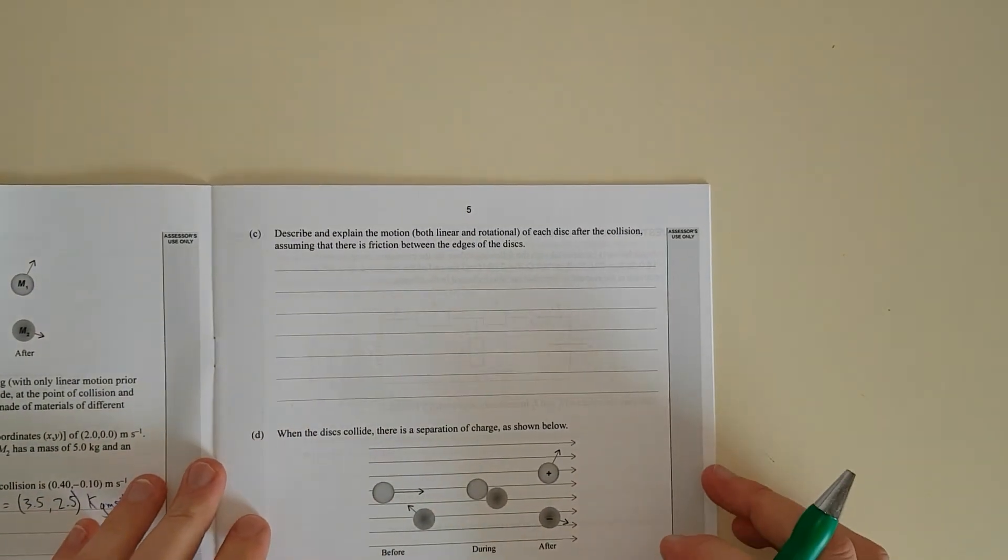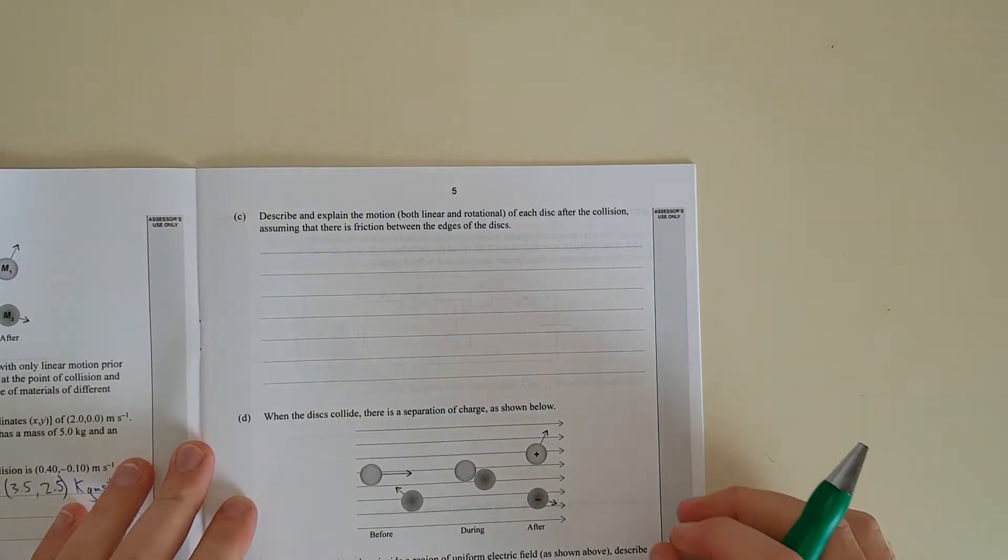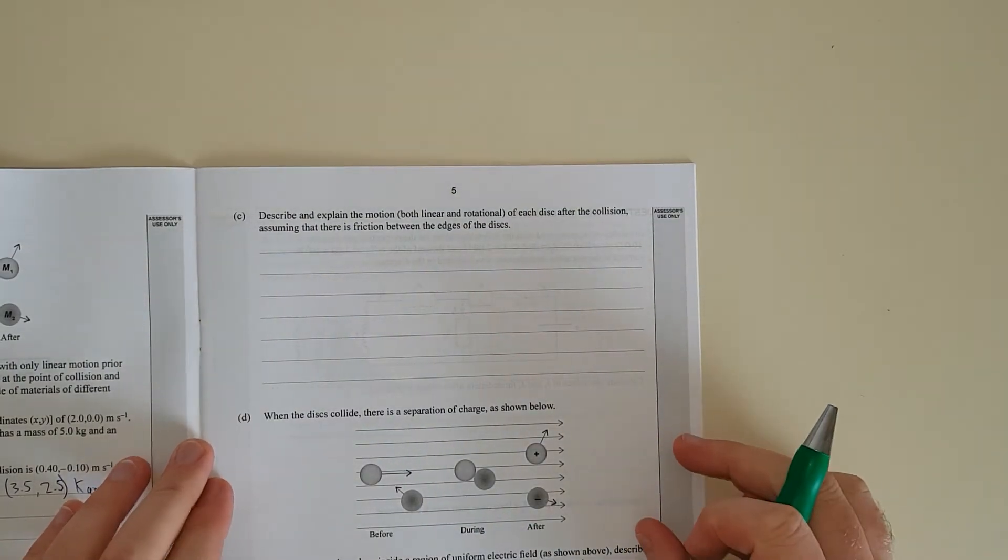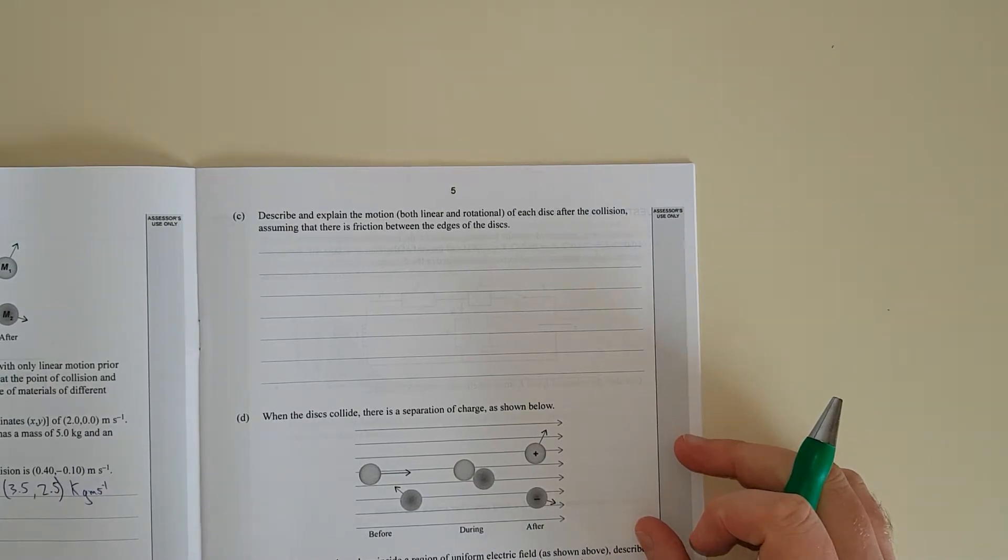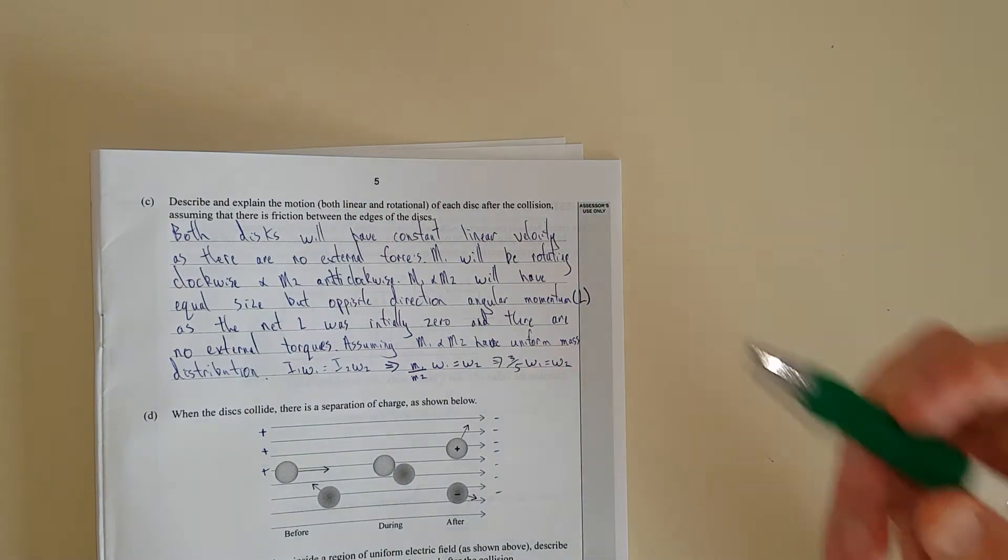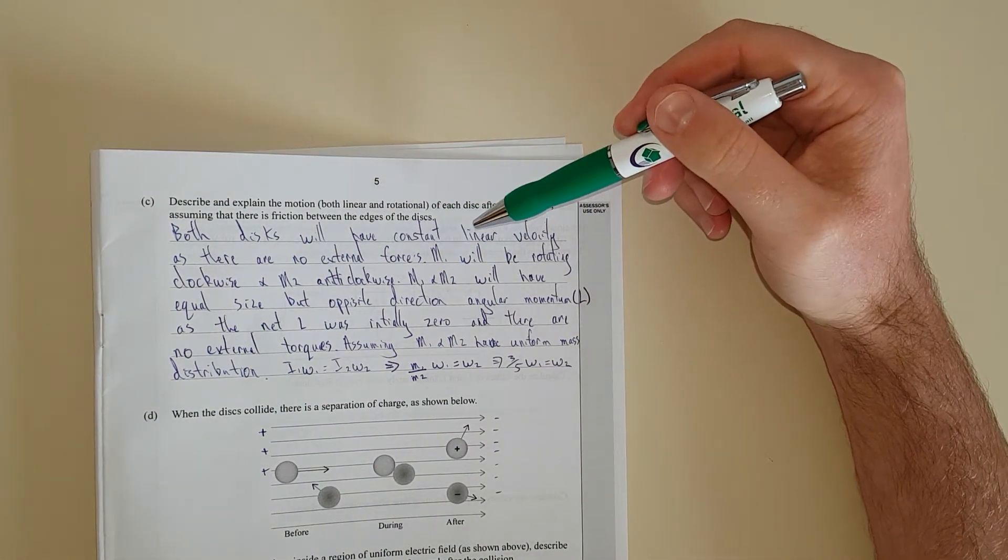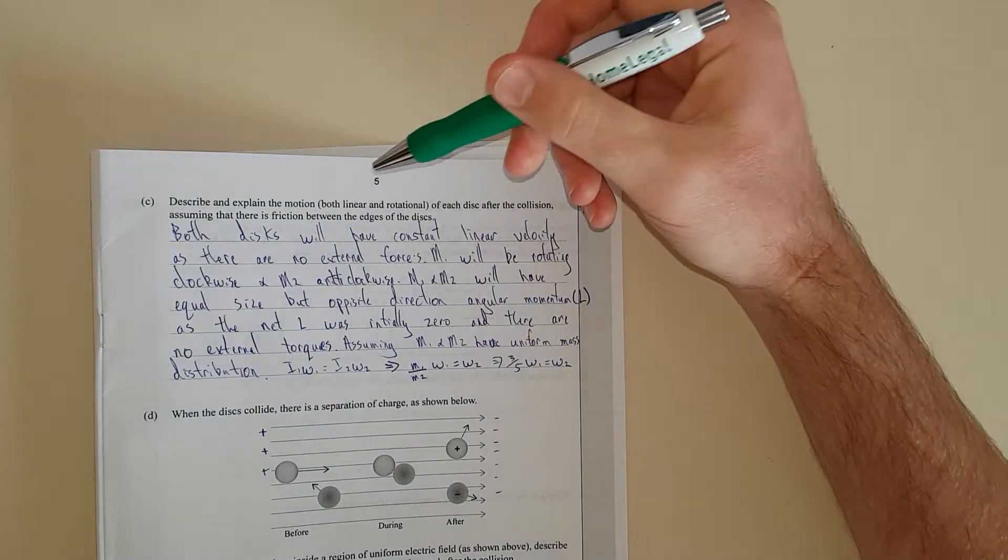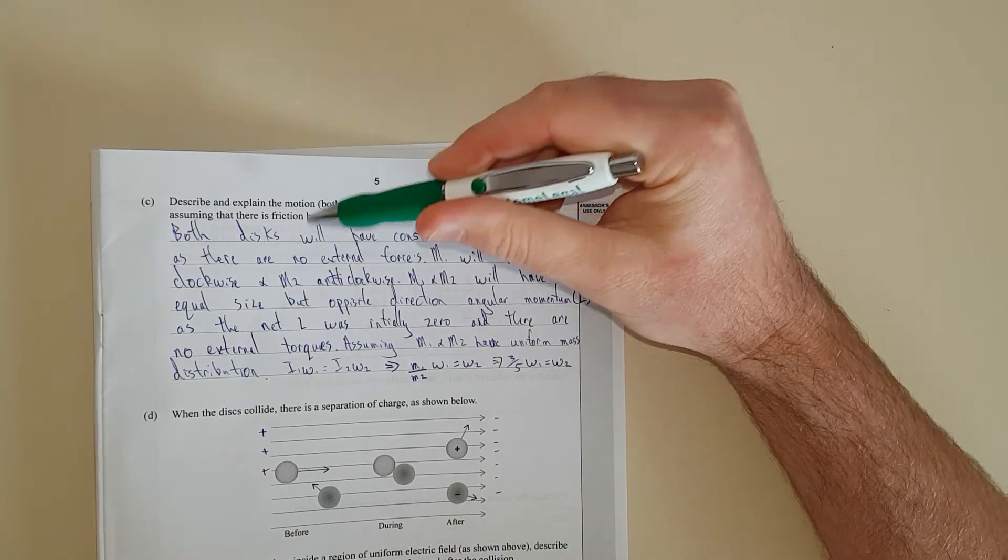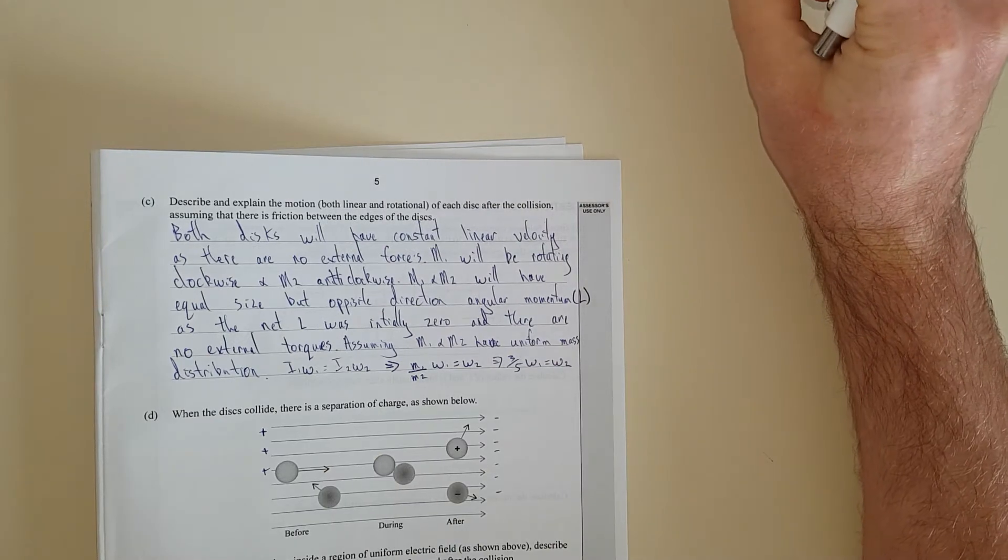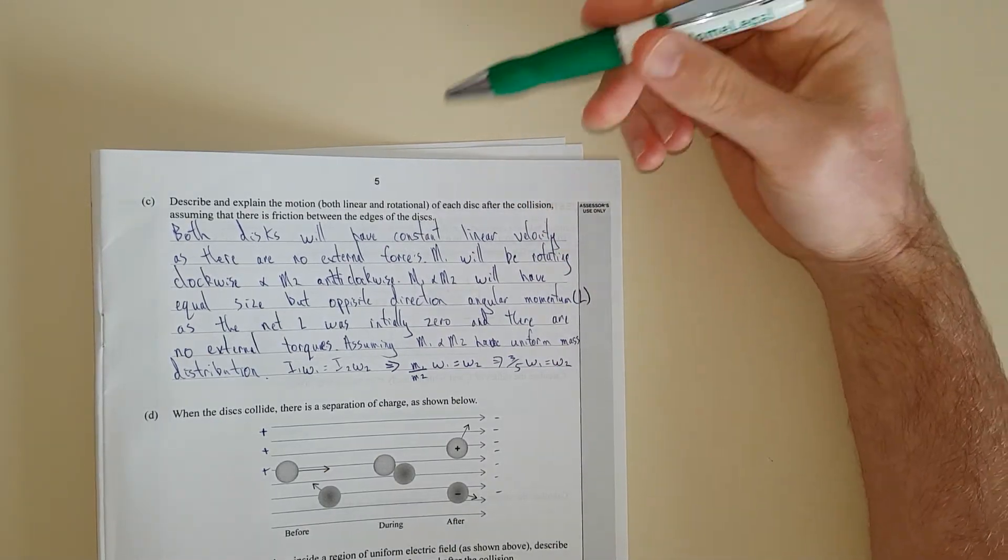We'll just move on to the next question. Describe and explain the motion both linear and rotational of each disc after collision assuming there's friction between the edges of the discs. So I'll just pause it and write it like I normally do and then discuss. I've said both discs will have constant linear velocity as there are no external forces.